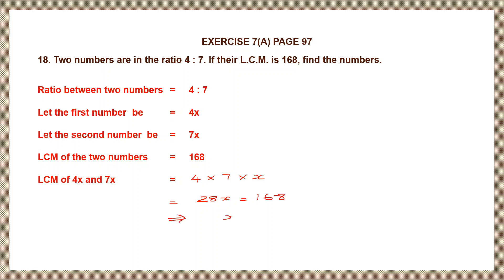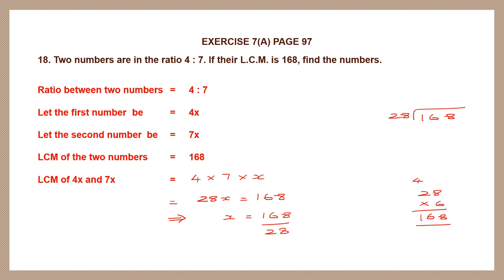Let's do that division: 168 divided by 28. Let's try 28 into 6 — 6 eights are 48, carry 4; 6 twos are 12 plus 4 is 16. So 28 into 6 is 168. We have found the value of x to be 6.